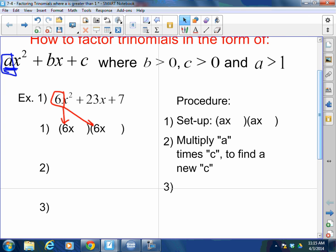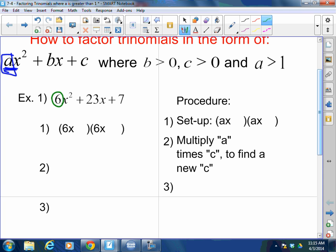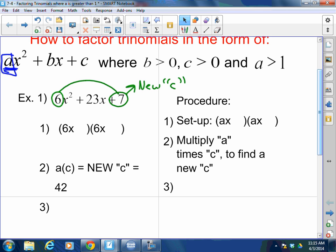Step 2, this is one of the different things. Multiply the a value times the c value to give me a new c value. So in this case, a times c is 42. 42 is now your new c value.